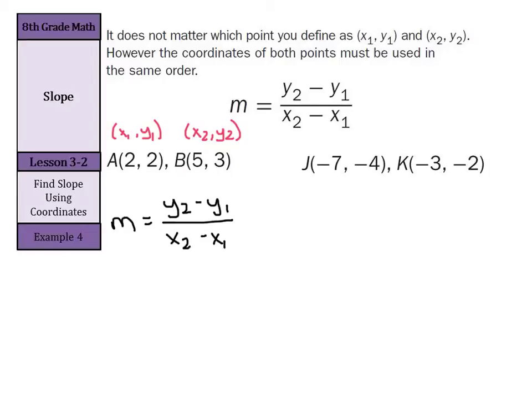So what we're going to do now is say, m is going to equal, substitute in. We have our y2, we're going to say is 3, minus our y1, we're going to say is 2, and we're going to divide that by our x2 comes next, which is 5, subtract our x1, which we're saying is 2, and now we just need to simplify. 3 minus 2 is 1, 5 minus 2 is 3, so the slope of this line is 1 third.